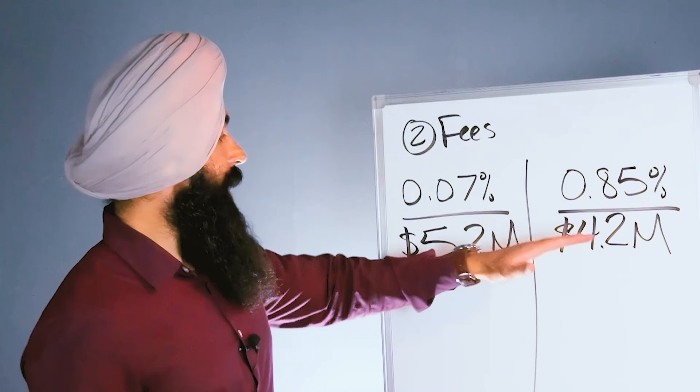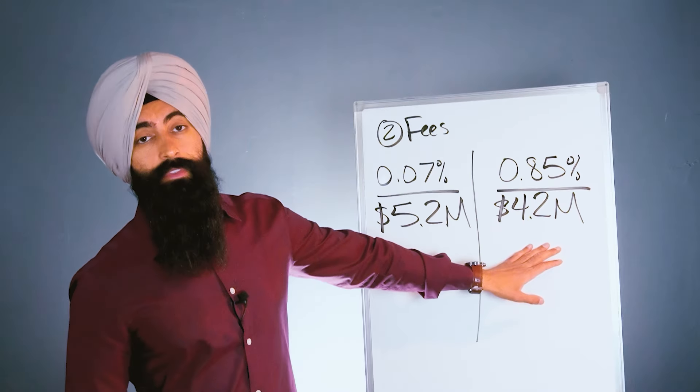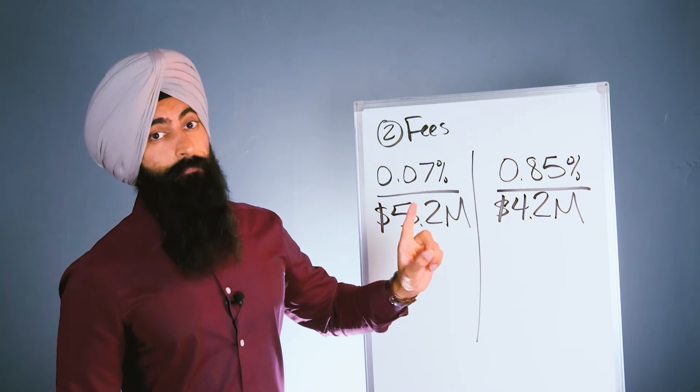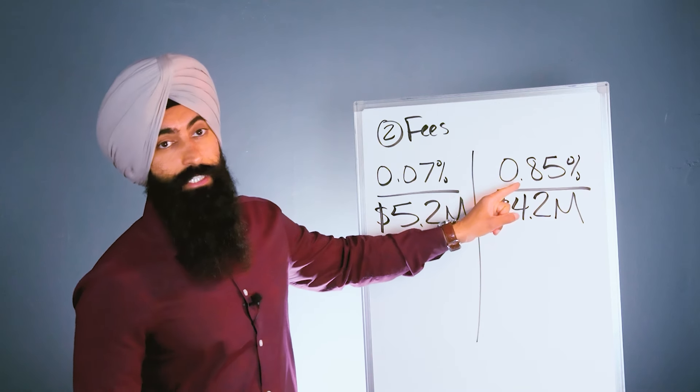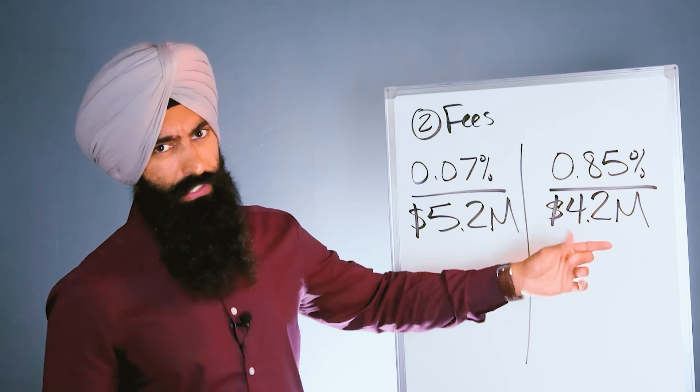That million dollars is going in fees to your money manager. This is why you want to see what this expense ratio is. I hate to tell you this, but many people are paying even higher expense ratios than this - I have seen people paying 1.5% expense ratios.